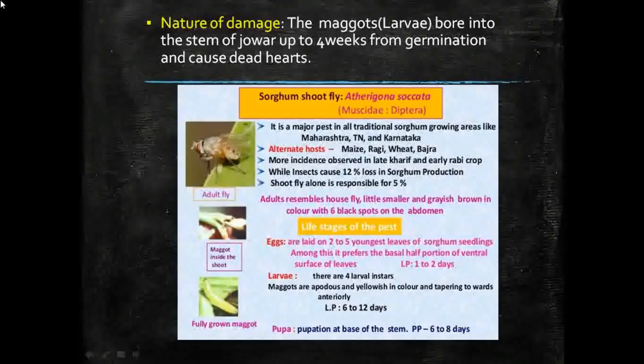The late sown sorghum or Jowar is damaged to a greater extent than early sown crop. The incidence is generally severe on sorghum sown between the second fortnight of October and first fortnight of February.